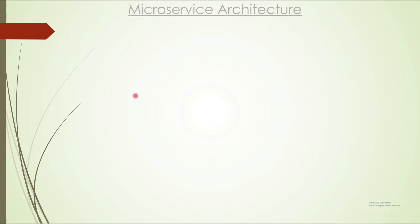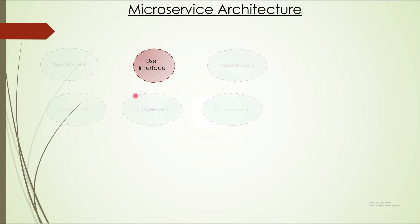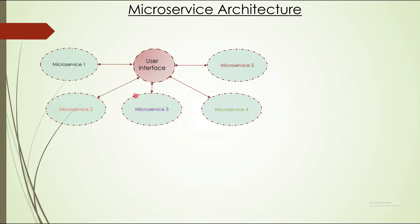Moving to the next architecture — microservices architecture. As the name itself suggests, it is about microservices. Suppose you are implementing a software that has a user interface and multiple features — not just one or two, but potentially many. What you can do is divide those features, treating each one as an independent unit. So microservice one represents one feature, microservice two represents a second feature, and so on. The whole application is divided into microservices, where each service implements one feature.